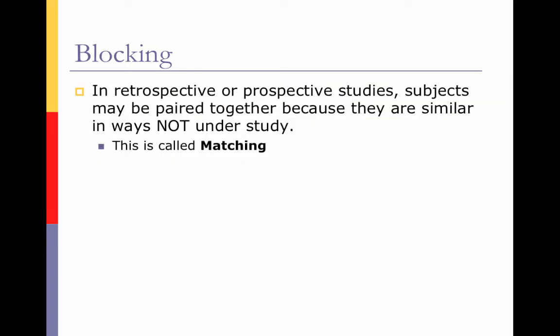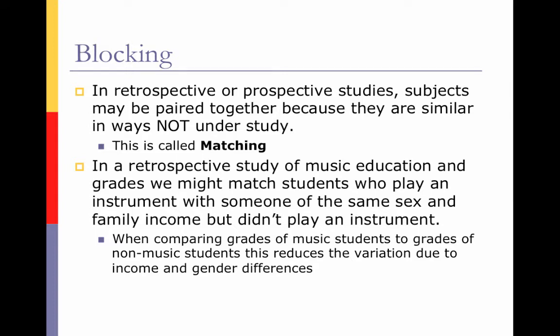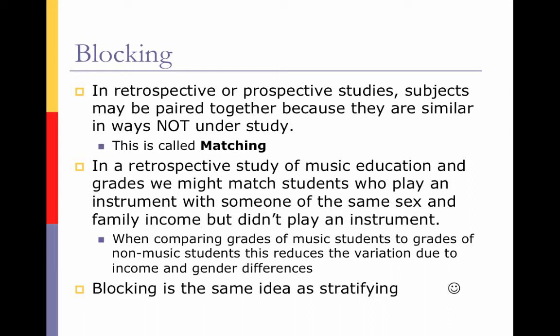In retrospective or prospective studies, subjects may be paired together because they are similar in ways not under study. This is called matching. We still use the same idea in observational studies — it's just a matching situation instead of a blocking situation. For example, in a retrospective study of music education and grades, we may match students who play an instrument with somebody of the same sex and family income who doesn't play an instrument. This reduces variation due to gender differences or income. So we're blocking out other variables by matching students with common situations. Blocking, matching, and stratifying are all the same idea.